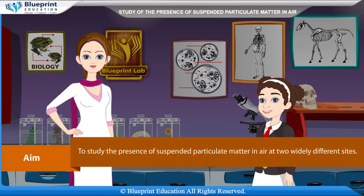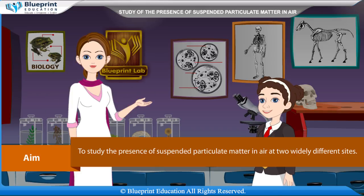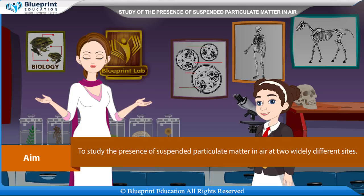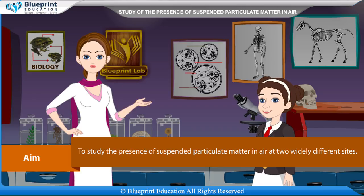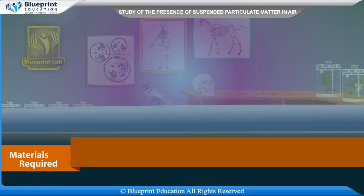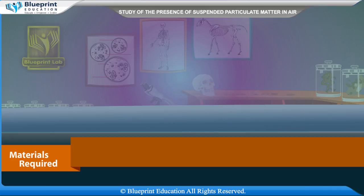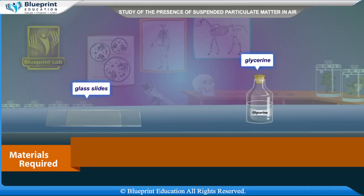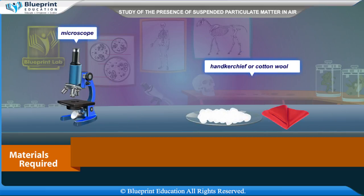Our aim is to study the presence of suspended particulate matter in air at two widely different sites. Materials required are cardboard, white tissue paper, torch, glass slides, glycerine, microscope, and handkerchief or cotton wool.